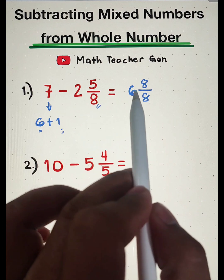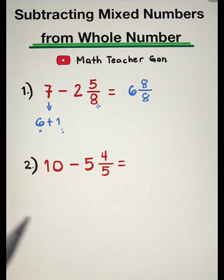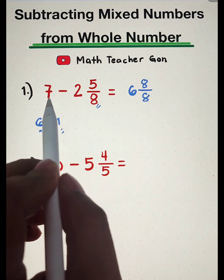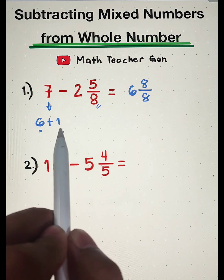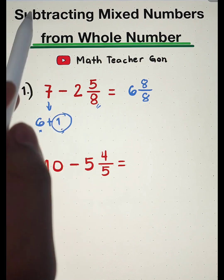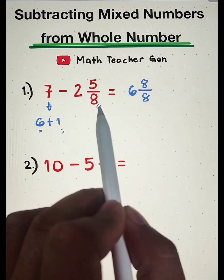Don't worry guys, this 6 and 8 over 8 is the same as 7. Again, let's have a recap. We separated the 7 into 6 plus 1, and then this whole number 1 is converted into a fraction 8 over 8 because of your denominator 8.